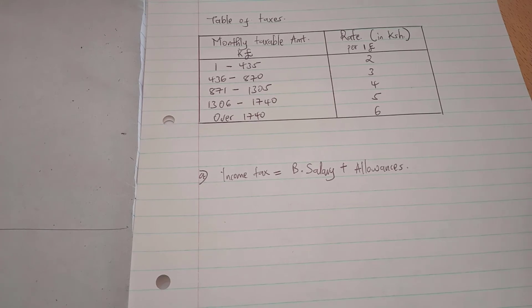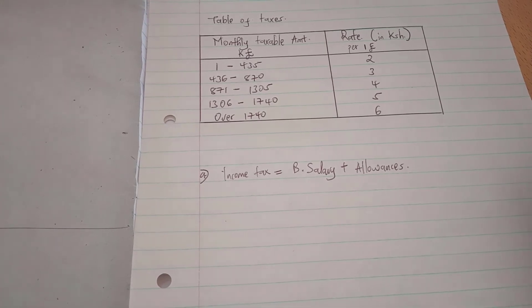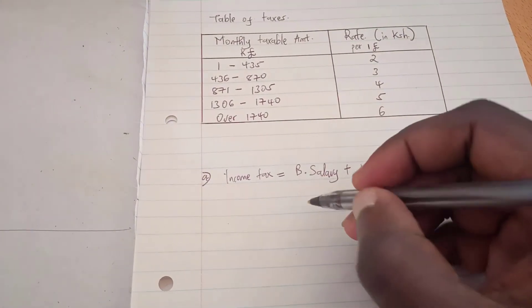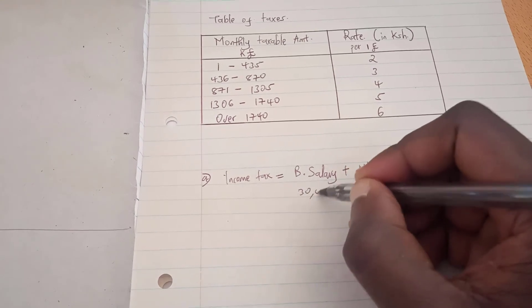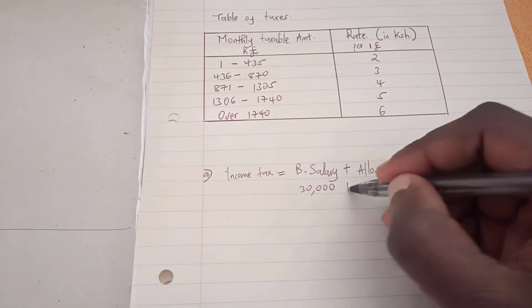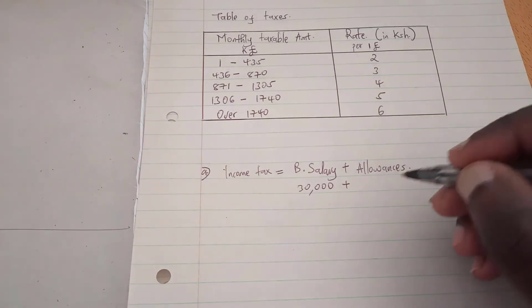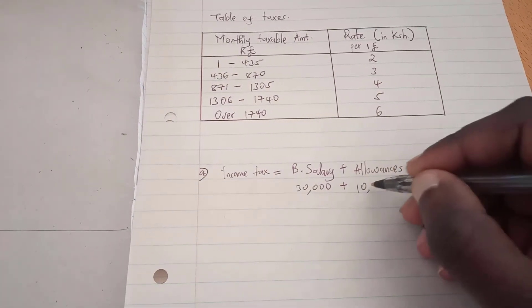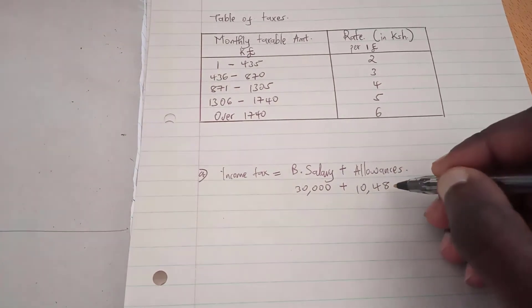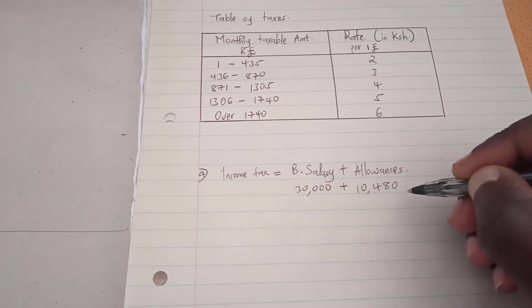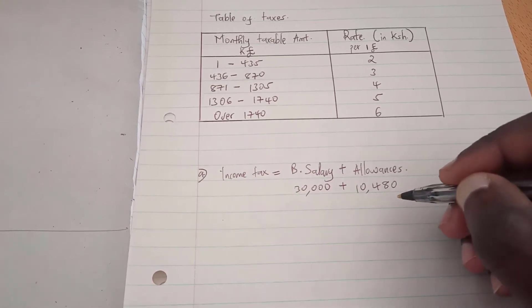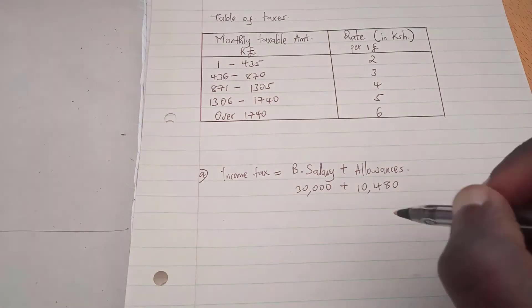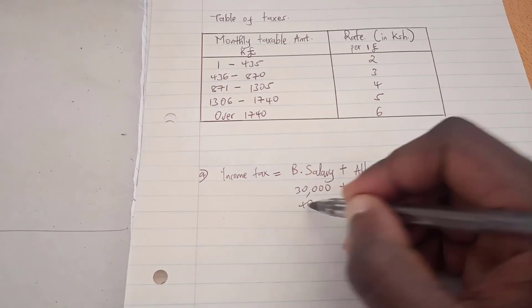Therefore, the income tax will be the basic salary which is 30,000 Kenyan shillings, added to the allowances which is 10,480 Kenyan shillings, and this should be equivalent to 40,480 Kenyan shillings per month.